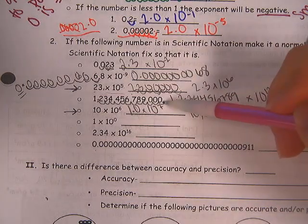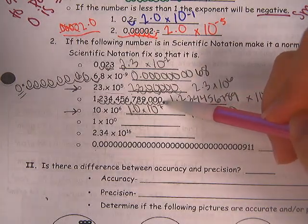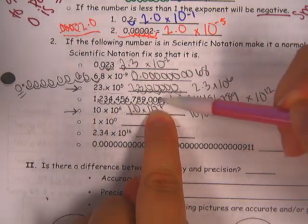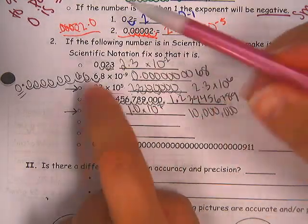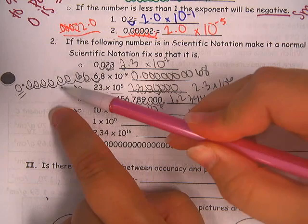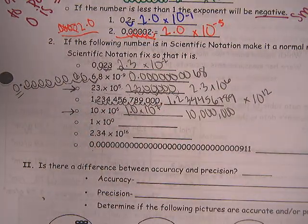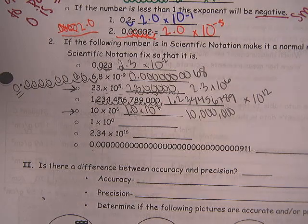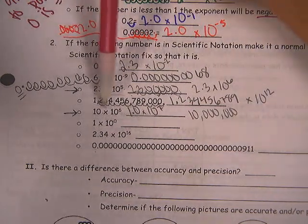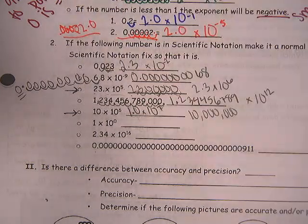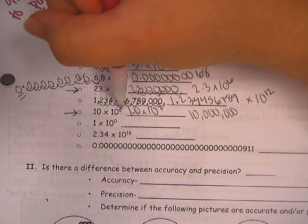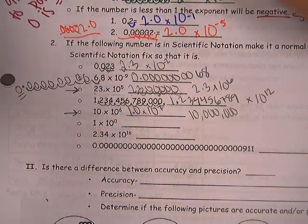This is why I don't teach the left and right thing: in this big number I moved my decimal to the left, and in the small number I also moved my decimal to the left. One is a really big number and one is a really small number, so it depends on whether you're going into scientific notation or out of it. Pay attention to positive exponent means big number, and a negative exponent means small number.